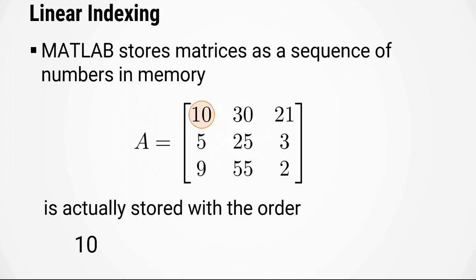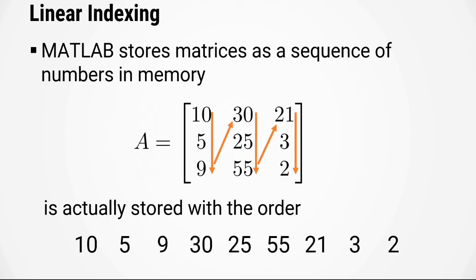The order of the numbers are 10, 5, 9, then 30, 25, 55, then 21, 3, and 2. So the numbers are stored according to this zigzag pattern across the matrix. Basically stacking the columns on top of each other.